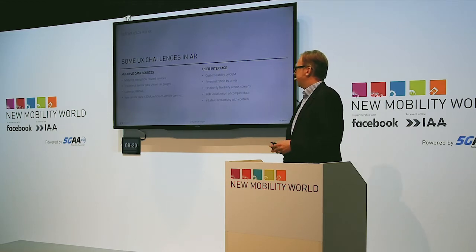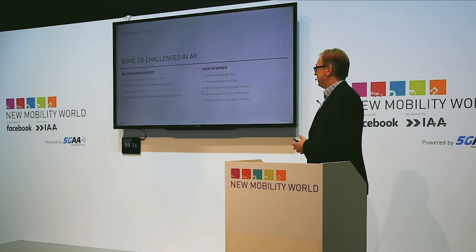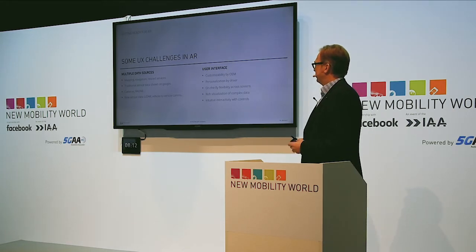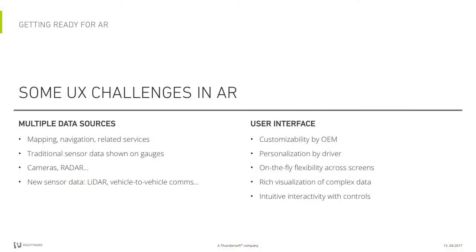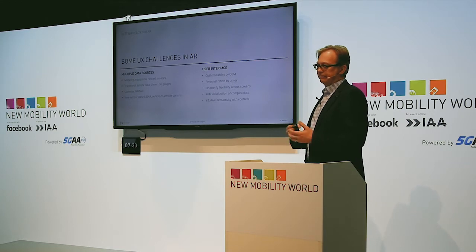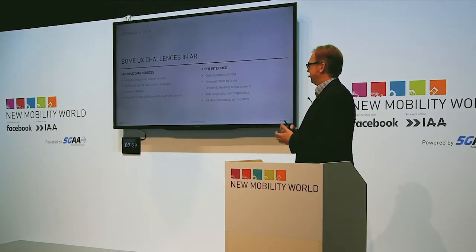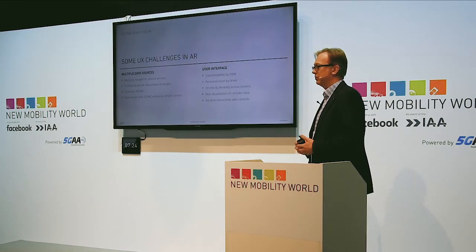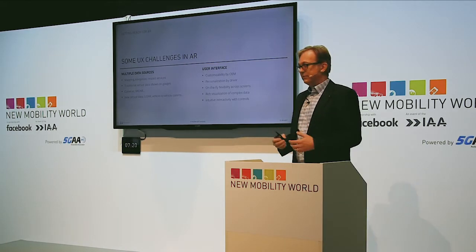Some of the challenges around AR involve integrating data from multiple sources and making that data useful for the user. A lot of this data already comes in from online services — it's real-time data. Some of it is familiar: mapping, points of interest, road conditions, and things relevant to where the car and driver are right now. This integrates with traditional sensor data about what's going on in the car, as well as radar, camera, and LIDAR — which is already in broad use — as we head toward assisted and autonomous driving, plus vehicle-to-vehicle communications. Lots of data from multiple sources has to be presented to the driver in a way that actually makes sense.